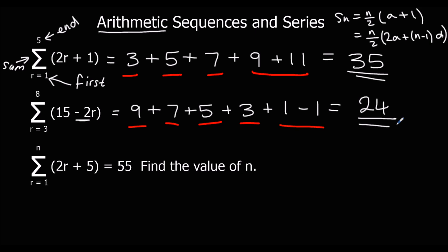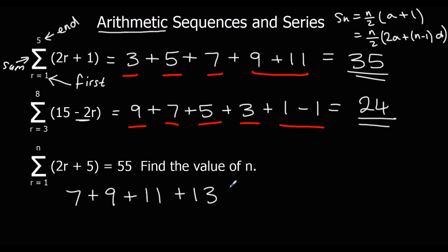The third question is different because we're told what it adds up to, and we have to work out n — what the end number was. Again, two ways of doing it. We could substitute into the formula, but we'd have to work out a and d first by finding the first two terms. It's probably just as easy to write them out and find how many numbers it takes to get to 55. So the first term: two ones plus five is seven. Then two twos plus five is nine. Two threes plus five, two fours plus five, two fives plus five — I think that's sixteen.